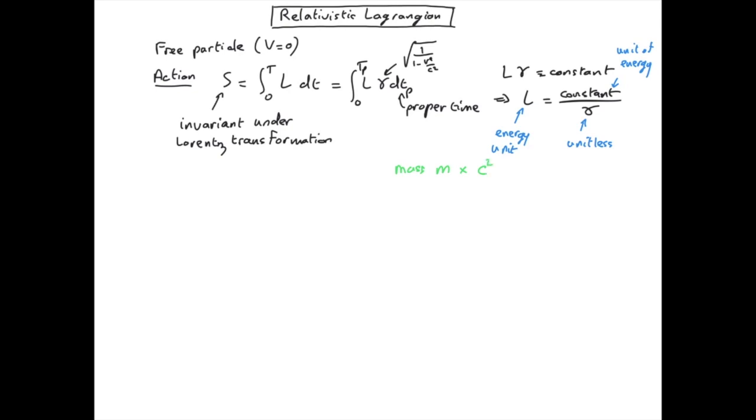So the only way I can build an energy, a constant energy, is if I take the mass and I multiply it by c squared. So my constant is proportional to mc².